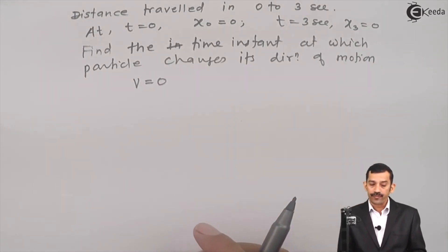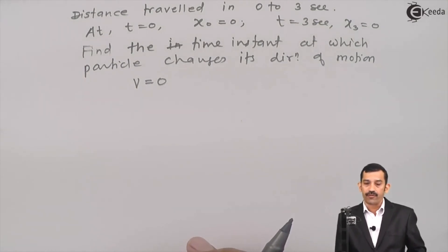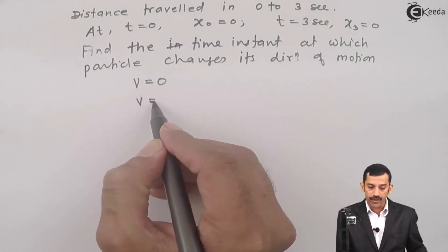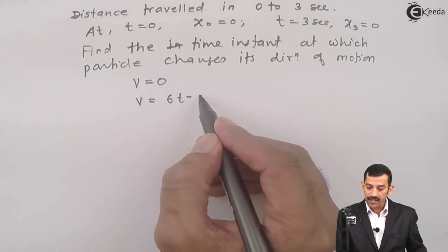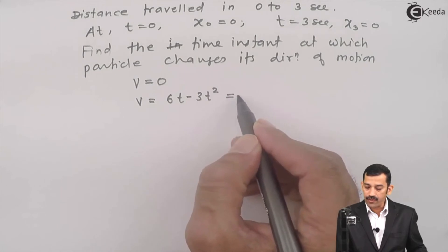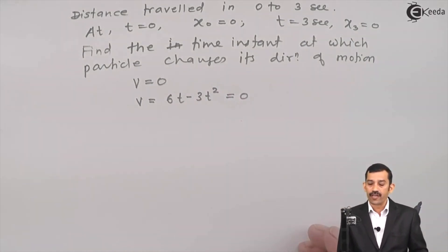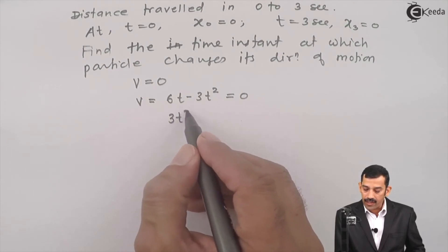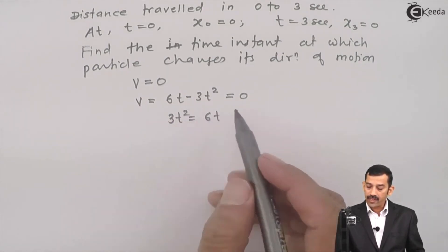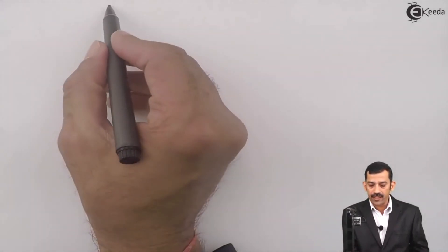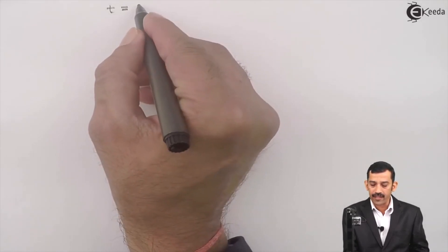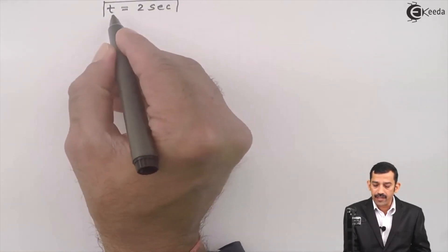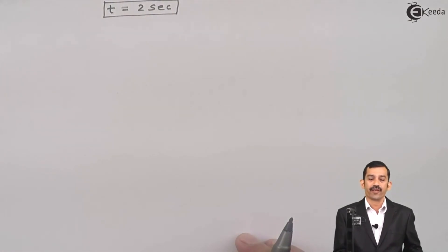Whenever a particle changes direction, its velocity becomes 0. Setting v = 6t minus 3t² = 0: we get 3t² = 6t, so t = 2 seconds. Therefore, within the interval 0 to 3 seconds, the particle's velocity becomes zero at t = 2 seconds — this is when it changes direction.